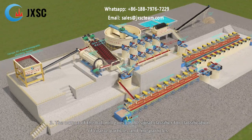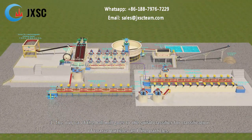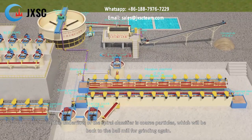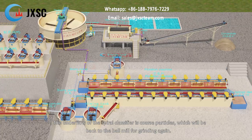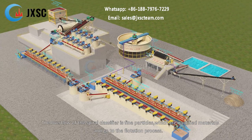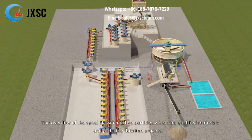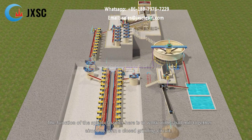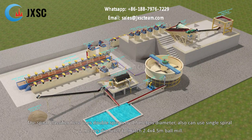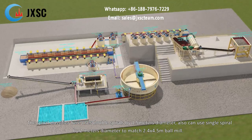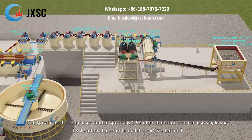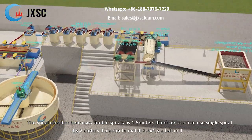The output of the ball mill goes to the spiral classifier for classification of coarse particles and fine particles. The underflow of the spiral classifier is coarse particles, which will be returned to the ball mill for grinding again. The overflow of the spiral classifier is fine particles, which are qualified materials and go to the flotation process. The function of the spiral classifier is to work together with the ball mill to form a closed grinding circuit. The spiral classifier uses double spirals of 1.5 metres diameter, or alternatively a single spiral of 2 metres diameter, to match the 2.4 × 4.5 metre ball mill.